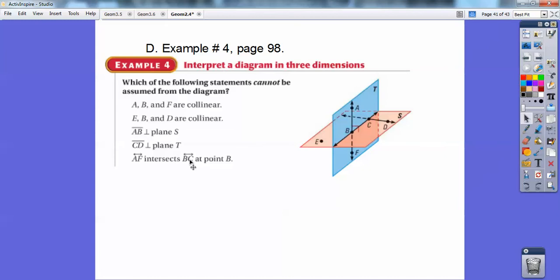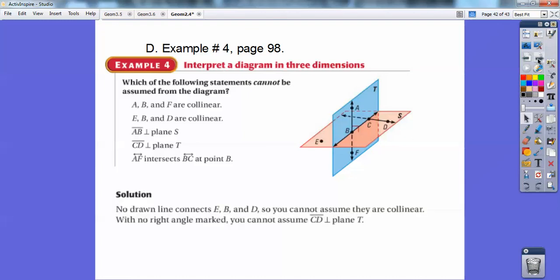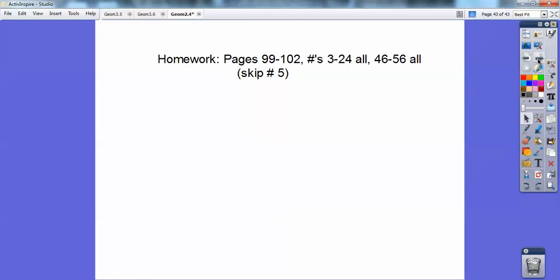Okay, line AF intersecting line BC. Here's AF intersecting line BC. BC is over here. That one doesn't look true either, so AF and BC don't even look like they intersect. They would be called skew lines. All right, so there we go. Okay, and I'm done with this lesson.